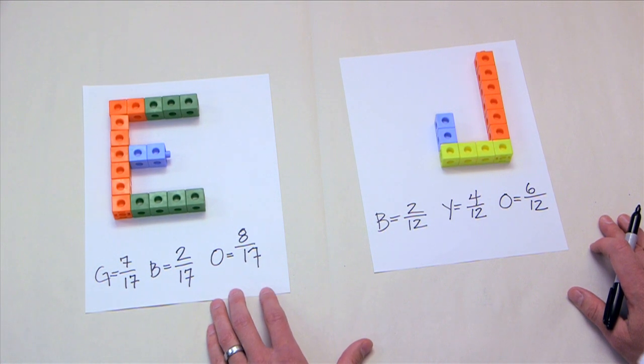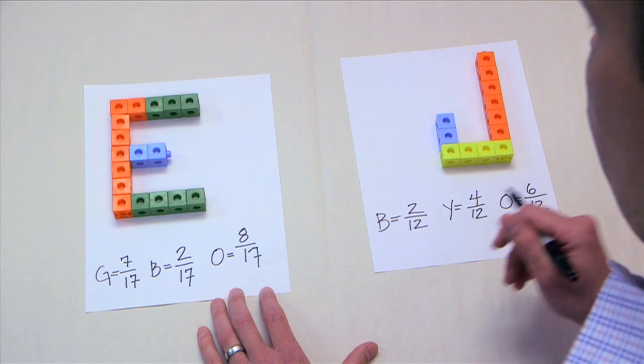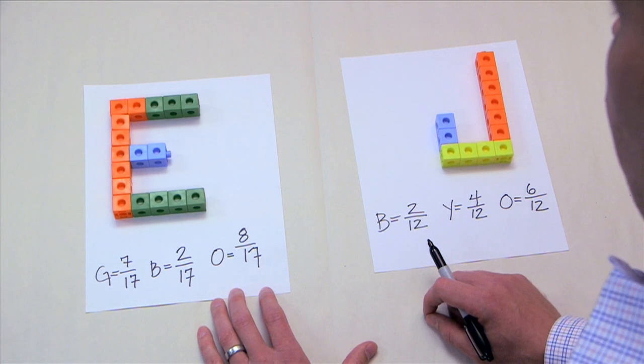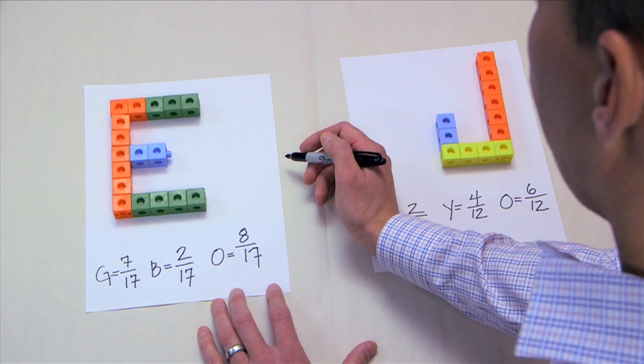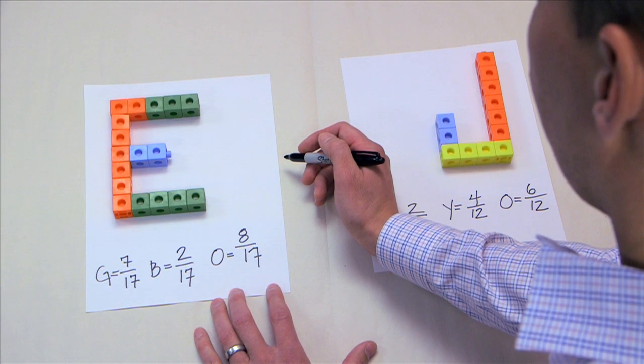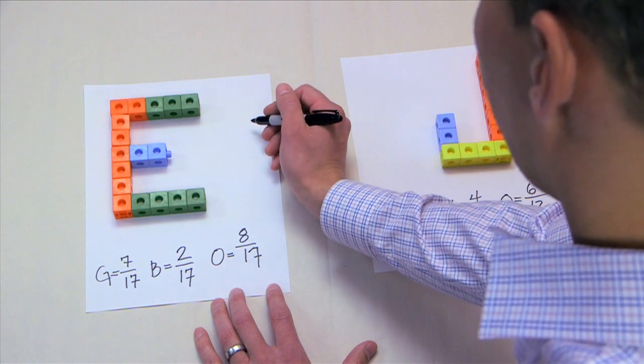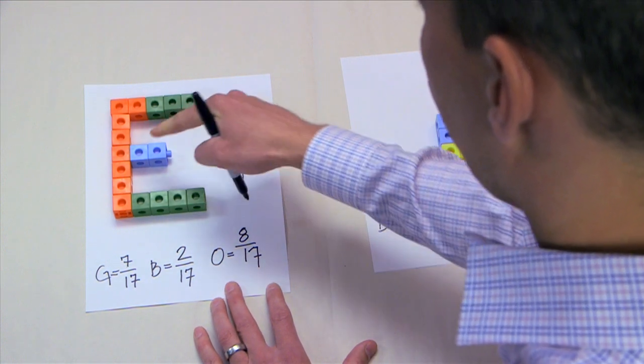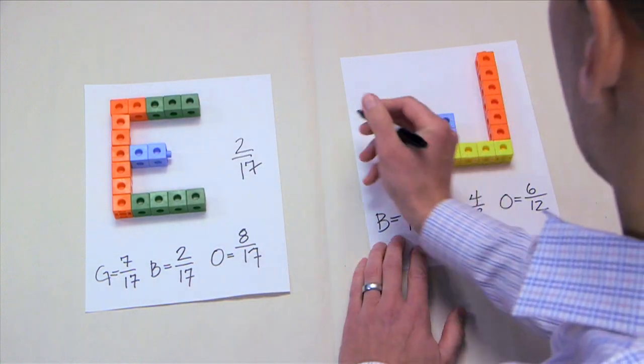When students compare their fractions and consider what makes a fraction bigger or smaller, they will need to think about the numerators and the denominators. In this case, two-seventeenths in the E is less than two-twelfths in the J.